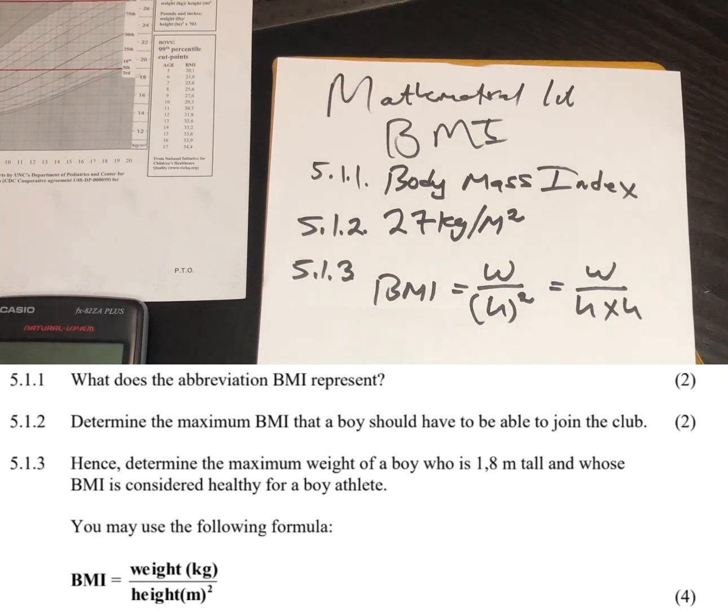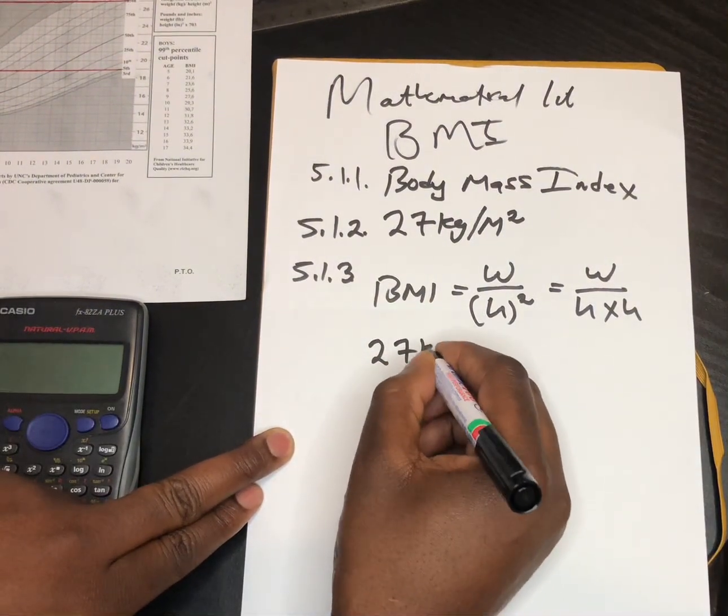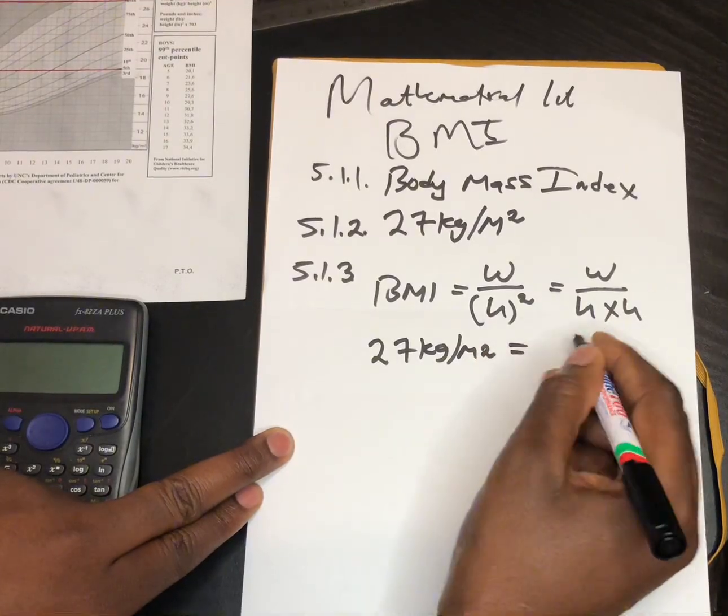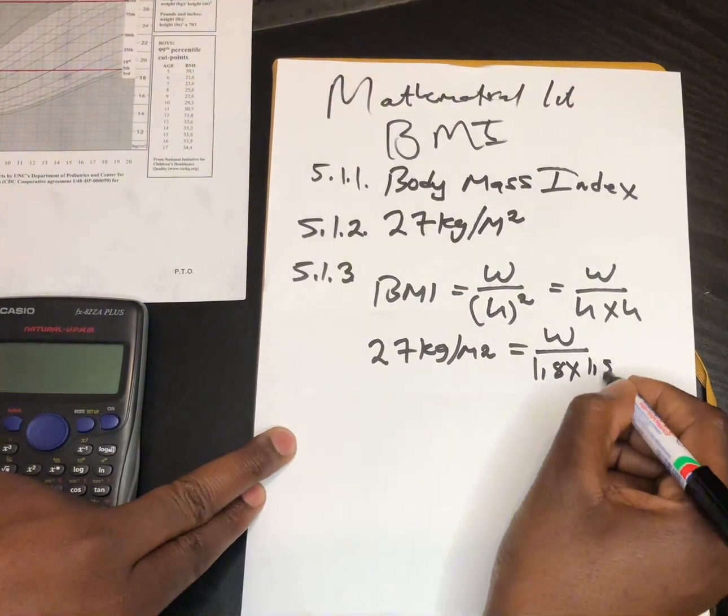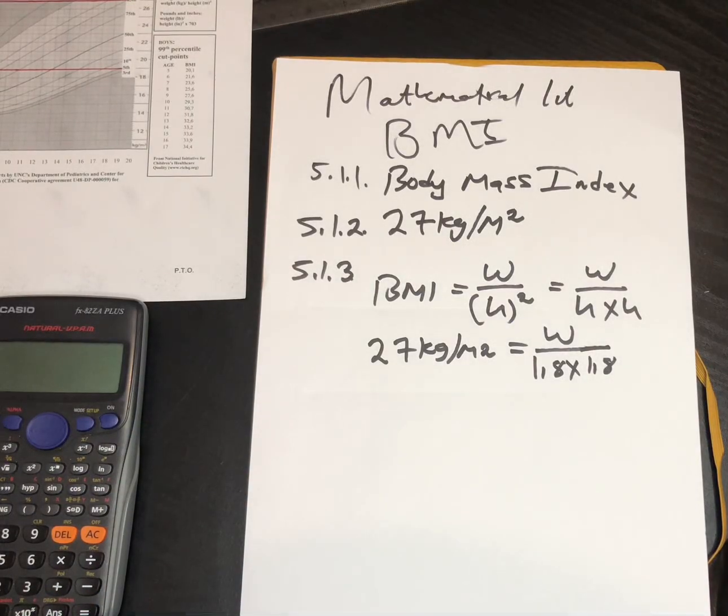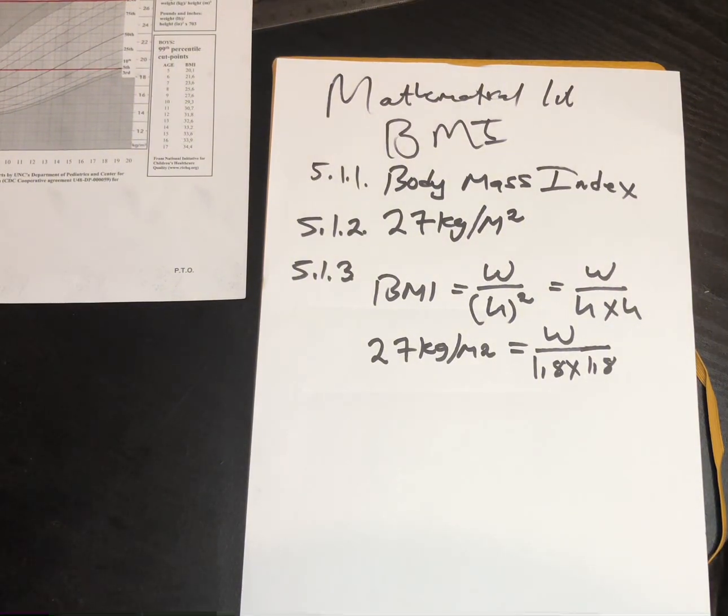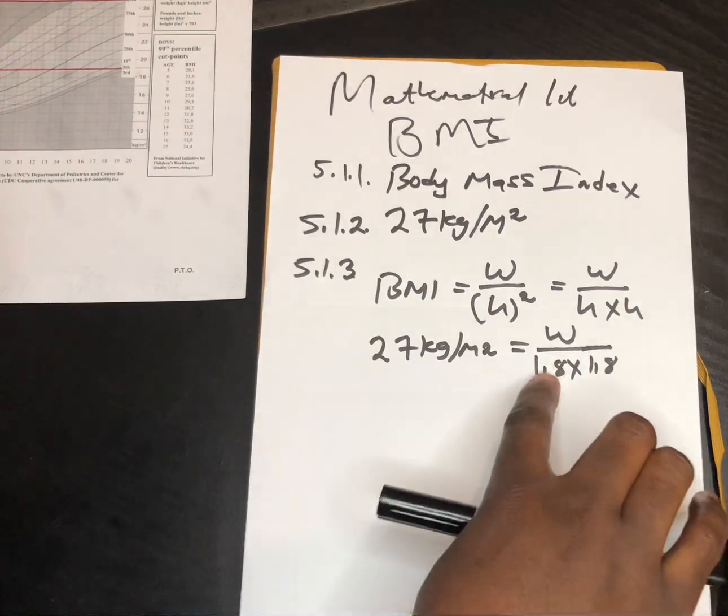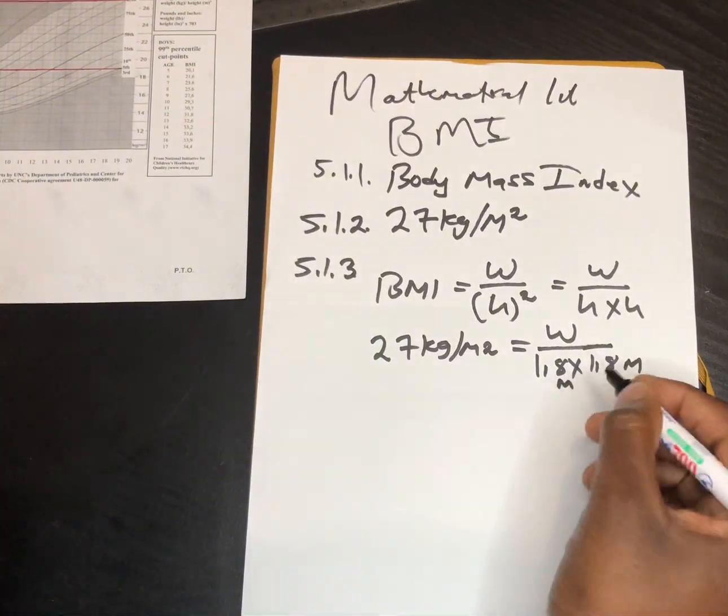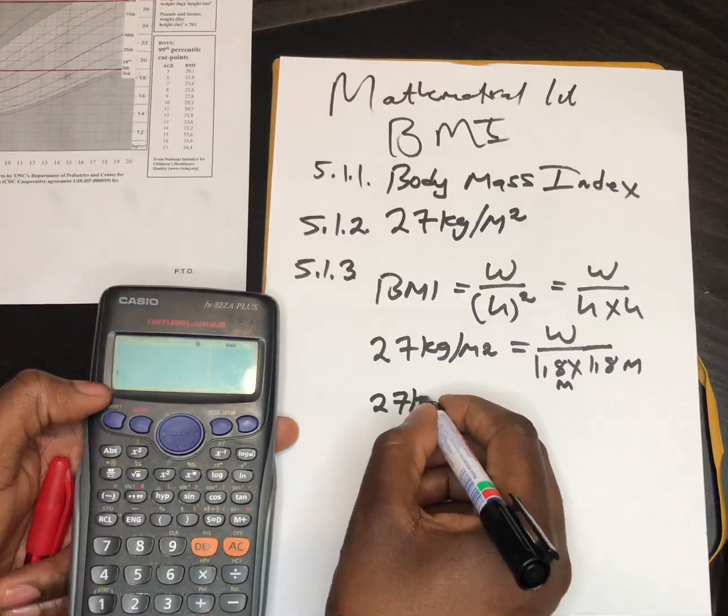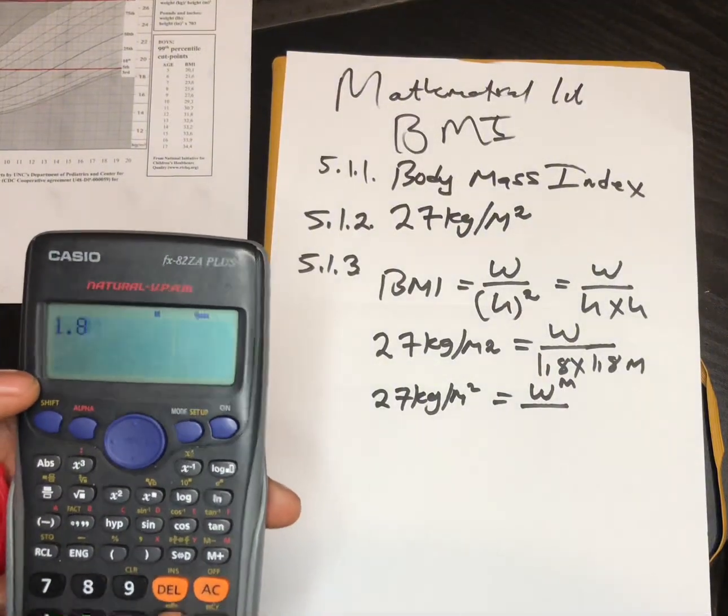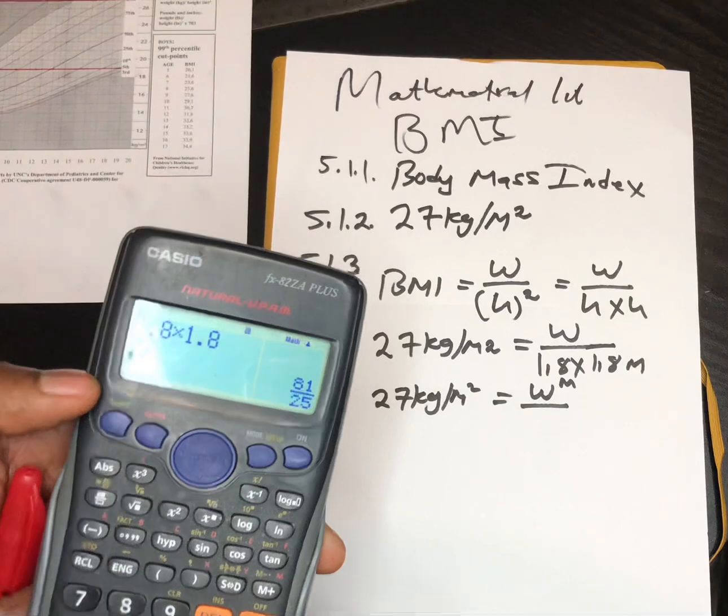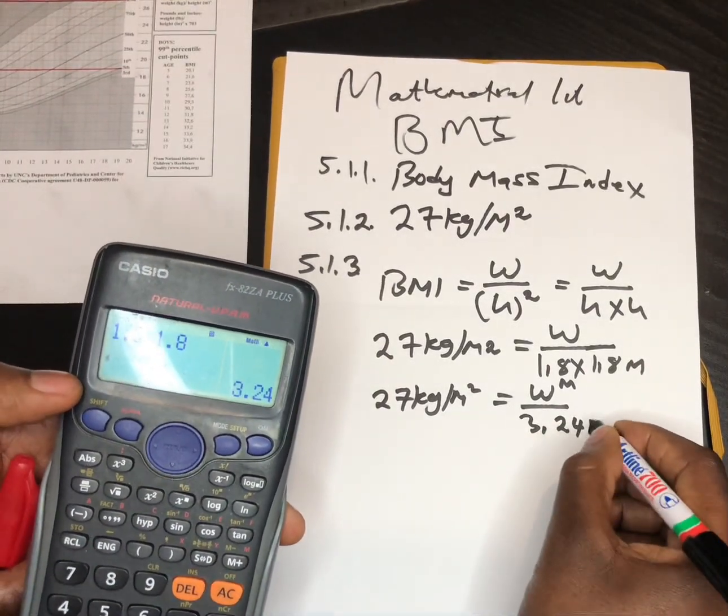So the BMI, we already have the BMI of this person. We said it's 27 kg per meter squared, which equals weight. We are looking for weight. Then height is 1.8 multiplied by 1.8. I prefer to use 1.8 multiplied by 1.8 because sometimes when we use 1.8 to the power 2, most of you get confused there. So when we multiply, it's easier. So we're going to have 27 kg per meter squared equals weight over 1.8 multiplied by 1.8. 1.8 multiplied by 1.8 equals 3.24 meter squared.